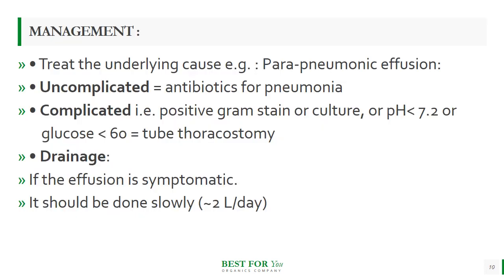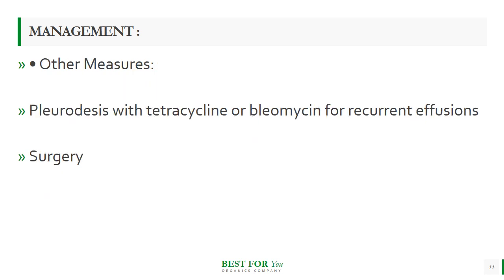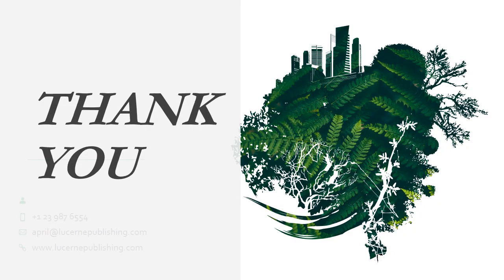You have to treat the underlying cause. For uncomplicated parapneumonic effusion where the effusion is not symptomatic, simply give antibiotics to treat the pneumonia or underlying cause. In complicated cases — for example if there is a positive Gram stain or culture, pH less than 7.2, or glucose less than 60 — perform tube thoracostomy. Drainage should be done if the effusion is symptomatic, slowly at less than 2 liters per day to avoid sudden hypovolemia. Other measures include pleurodesis with tetracycline and bleomycin for recurrent effusions, and surgery.